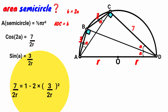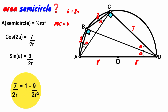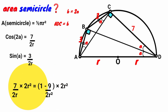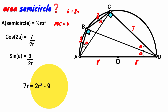Substituting: 7 over 2R = 1 − 2 × (3 over 2R)². Now (3 over 2R)² = 9 over 4R². This 4R² divided by 2 gives 2R². So 7 over 2R = 1 − 9 over 2R².